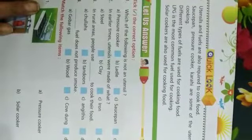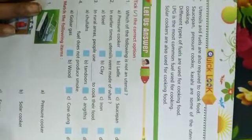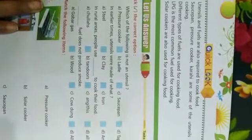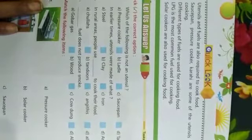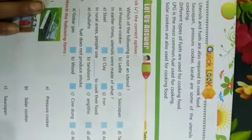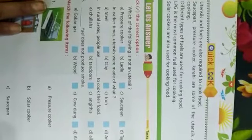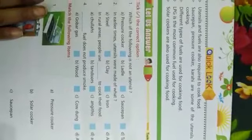Quick recap: Utensils and fuel are required to cook food. Saucepan, pressure cooker, and kadai are some utensils used in cooking. Different types of fuels are used — LPG is the most common fuel, and solar cookers are also used for cooking food. Next class mein hum iski exercise karenge. Thanks so much, have a nice day!